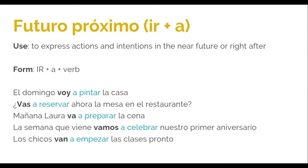As you can see, the verb ir changes depending on the person. If it's I, I say voy. If it's you, vas. Laura is she, so va. Nosotros vamos. And ustedes or ellos — van. So I change the verb ir according to the subject, and then the preposition a, and then the verb in the infinitive — which never changes: voy a pintar, vas a reservar, va a preparar, vamos a celebrar, van a empezar. If you want a negative sentence, you just add no at the beginning — el domingo no voy a pintar la casa — I am not going to paint the house. Mañana Laura no va a preparar la cena. You just add no and that's it — you have the negative.